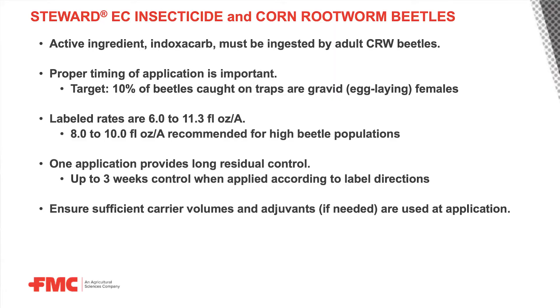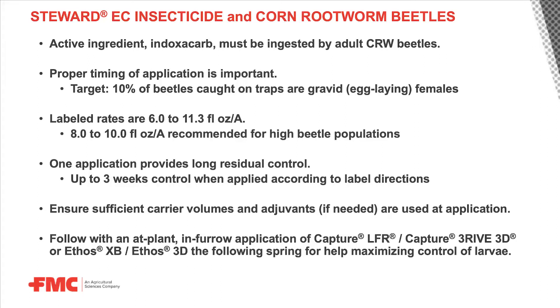Be sure to check the label for additional information that's going to help with coverage, especially in a dense canopy for a tall crop like corn, making sure we have the proper carrier volumes and whether we need to add an adjuvant. Finally, for enhanced control of the corn rootworm population in a corn-on-corn setting, follow your in-season application of Steward EC insecticide with an at-plant application of FMC's Capture or Ethos products the following spring. Contact your local FMC representative for more information about this two-pronged approach, or visit ag.fmc.com.